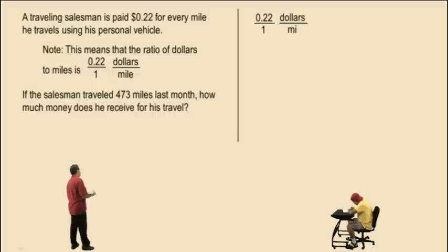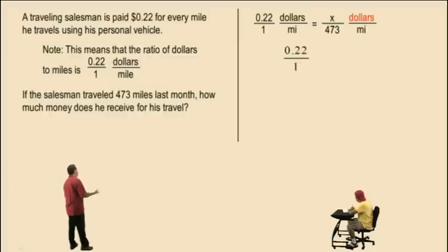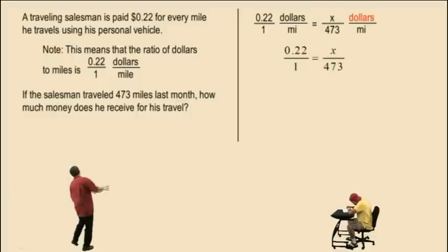Let's begin with our given quantity, it's .22 dollars per one mile. Now since we are looking for a dollar amount, our variable x is going to show up in the numerator because that's x dollars per 473 miles. Notice how the units match on both sides of the proportion. Therefore our proportion equation is 0.22 over 1 equal to x over 473. And now we cross multiply.